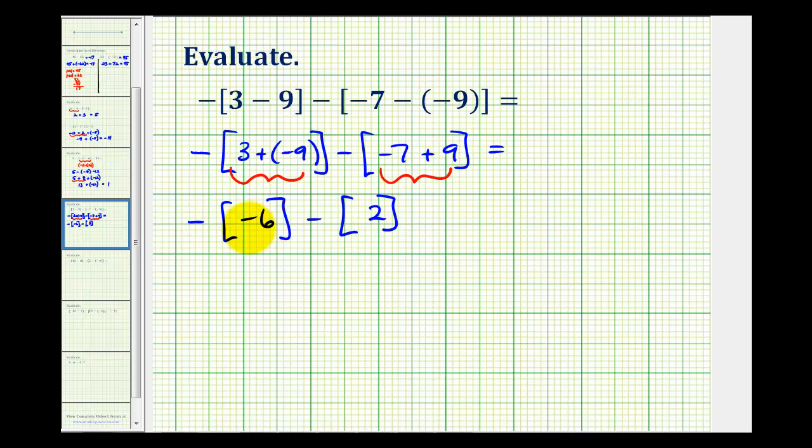And now we have the opposite of negative 6, so that would be positive 6. And then minus positive 2 is the same as plus negative 2, which would be equal to positive 4.